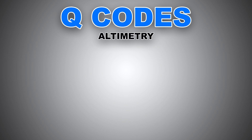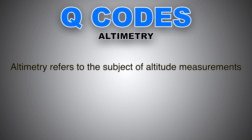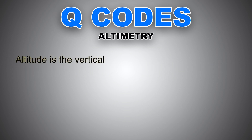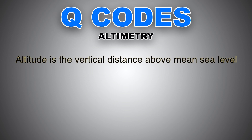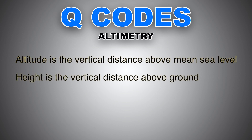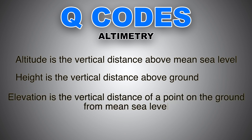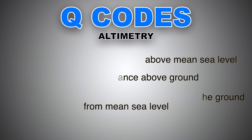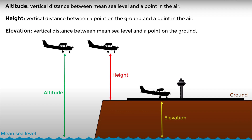We will start by taking a look at altimetry first. Altimetry refers to the subject of altitude measurements. For ease of understanding, let's tackle some terminology first. Altitude is the vertical distance above mean sea level. Height is the vertical distance above ground or terrain. Elevation is the vertical distance of a point on the ground from mean sea level. This picture will help you visualize the three words and their meaning.